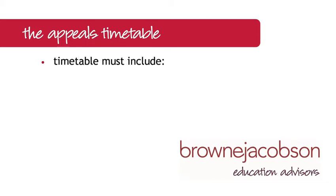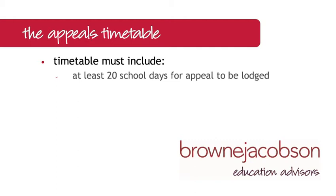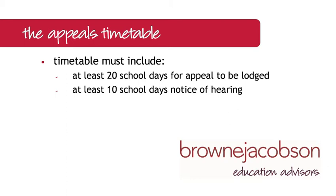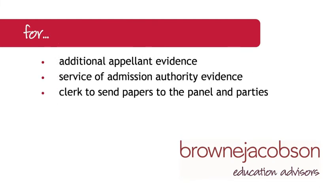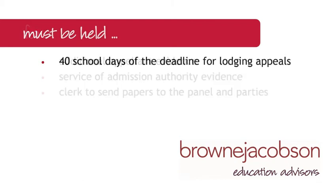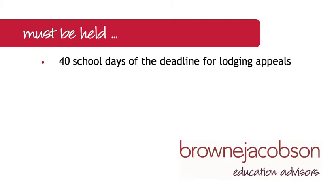That timetable is very prescriptive. It must include at least 20 school days from the date of notification for an appeal to be lodged, at least 10 school days notice of hearing, although this can be waived by parents. You must provide reasonable deadlines for additional appellant evidence, service of admissions authority evidence, and for the clerk to send papers to the panel and the parties in advance of the hearing. Finally, there is a catch-all that says appeals must be held within 40 school days of the deadline for lodging appeals.